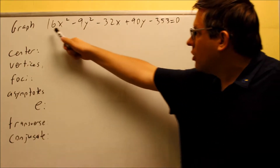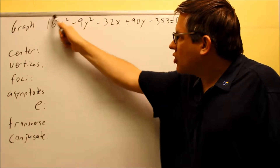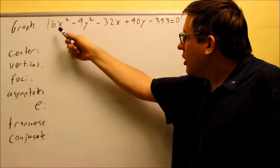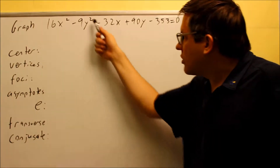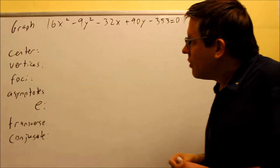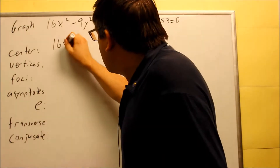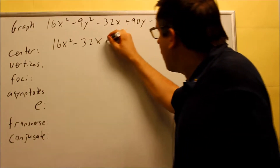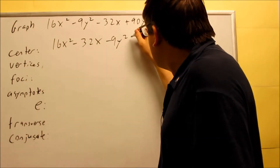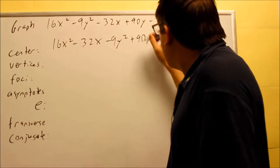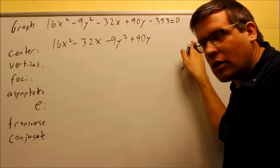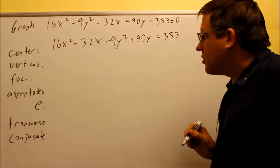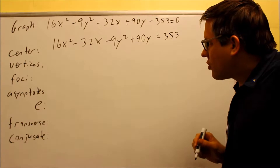What you're going to do is look for whatever squared term is positive — that's the one you begin with. So I want to start with 16x squared and put the x terms together. Then we have minus 9y squared plus 90y, and 353 is going to go across the equal sign and become positive. That's the beginning setup for this one.